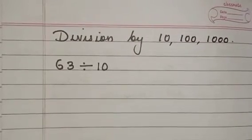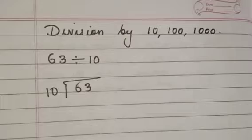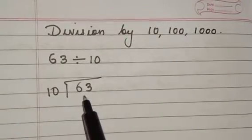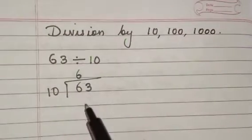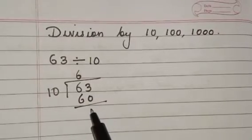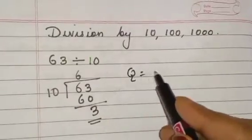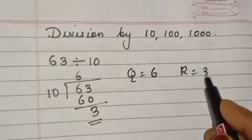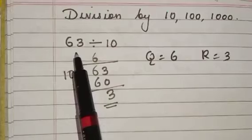We are going to learn division by ten, hundred, and thousand. We can see some examples: 63 divided by 10. First we can do the usual method — 10 goes into 63 how many times? You already know the ten table: six tens are 60, so the remainder is 3. In this question, the quotient is 6 and the remainder is 3.